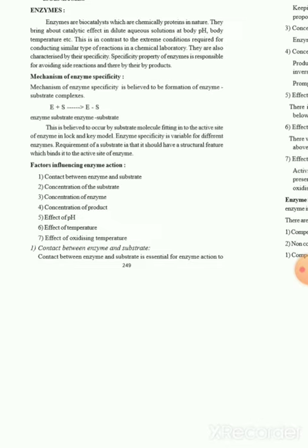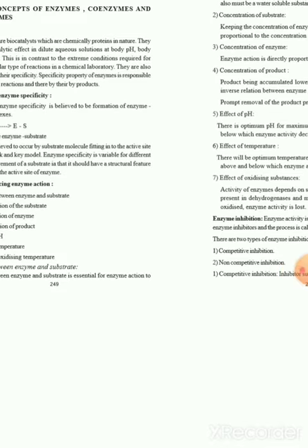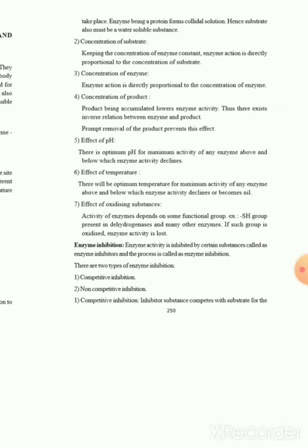Next, we have the different factors influencing enzyme activity. First, we have contact between enzyme and substrate — this contact is essential for enzyme action. Enzyme, being a protein, forms a colloidal solution, so the substrate must also be water soluble. Next, concentration of substrate: keeping enzyme concentration constant, enzyme action is directly proportional to substrate concentration. Similarly, enzyme action is directly proportional to enzyme concentration. Product accumulation lowers enzyme activity, so there is a reverse relationship between product concentration and enzyme activity. Promoting removal of product prevents this inhibitory effect.